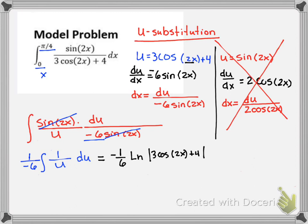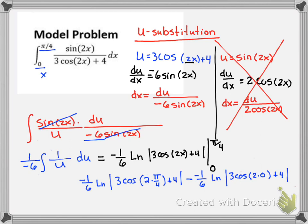But we know that u was 3 cosine of 2x plus 4. Now that we've plugged in our u in terms of x, I can use my original limits of integration of 0 and π over 4. So now as we do this, we have negative 1/6 ln of 3 cosine of 2 times π over 4 plus 4 minus negative 1/6 ln, 3 cosine of 2 times 0 plus 4. Simplifying, this is π over 2. Cosine of π over 2 is 0.